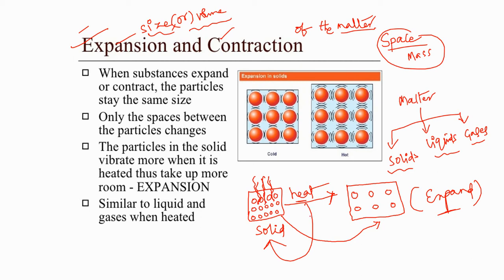This is what expansion of solids. Here you can see a solid in normal or cold mode. When you heat this solid, it gets bigger in size. In the first picture, the particles are very close to each other, but in the second picture, the gap between the solid particles has increased due to heating. The size of each solid particle remains the same before and after heating — only the distance between solid particles increases on heating. This is called expansion of solids.